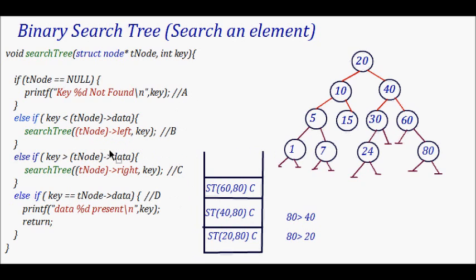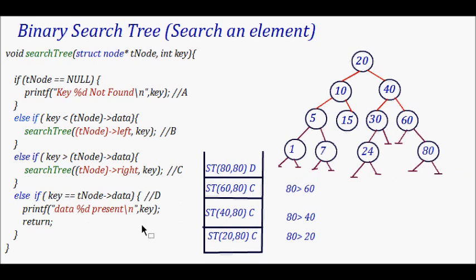Now I'm in the subtree with root node 60, searching for 80. Node 60 is not null, and key 80 is not less than 60 — it's greater — so I call search_tree on t_node->right. Then I reach node 80. The data 80 is not greater than root node 80, it's not less than 80 — it's equal — so I find the value. That's how you search in a binary search tree.